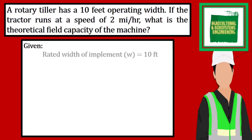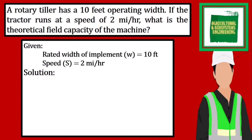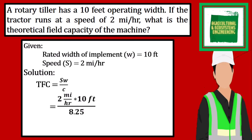The given in the problem are the width of implement of 10 feet, and the speed of 2 miles per hour. Now we proceed with the solution. Theoretical field capacity is equal to the speed of 2 miles per hour multiplied by the width of implement of 10 feet, all over the constant of 8.25. We used this value since the unit of measurement used in the problem is the English system. We simply solve, giving us a final answer to the problem of 2.42 acres per hour. That is now the solution to problem number 2.